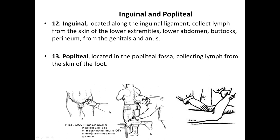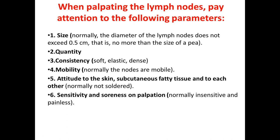When palpating lymph nodes, pay attention to the following parameters. First, assess the size: normally the diameter of lymph nodes does not exceed 0.5 cm — no more than the size of a pea. Assess quantity, consistency — elastic, soft, or dense. Mobility: normally the nodes are mobile. Attitude to the skin, subcutaneous fatty tissue, and to each other — normally not soldered. Finally, assess sensitivity or soreness: lymph nodes may sometimes be painful or sensitive to palpation.